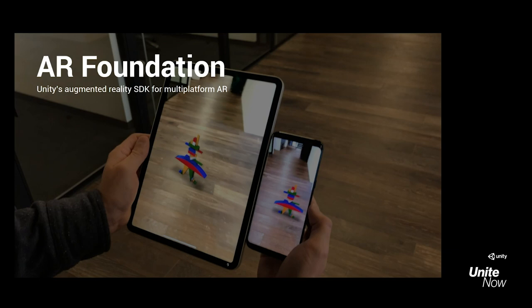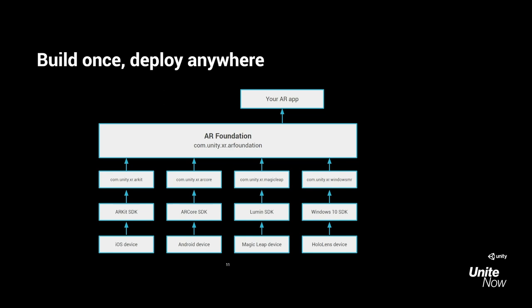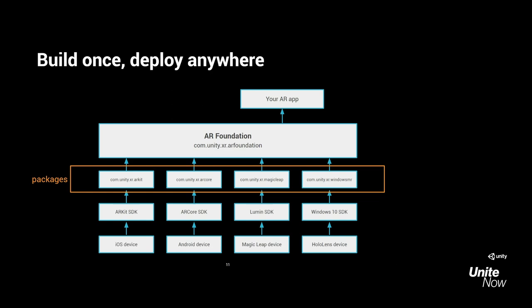Now let's talk about AR Foundation. This is Unity's augmented reality SDK, specifically built for enabling multi-platform AR experiences. When you look at AR Foundation, at the bottom you have the different devices, on top of that the SDKs built by those platforms. On the Unity side, we have packages for ARKit, ARCore, Magic Leap, as well as Windows MR to enable HoloLens. All of these packages feed data up into AR Foundation, which has subsystems allowing you to take data from these different platforms at an abstracted layer. As a developer, you can simply build your AR Foundation application to these different platforms.